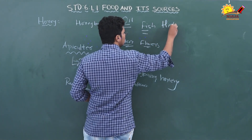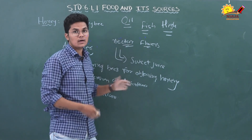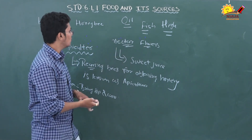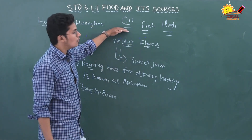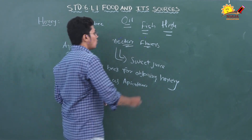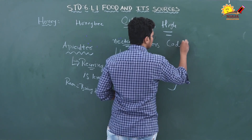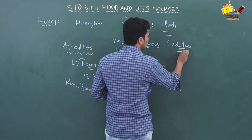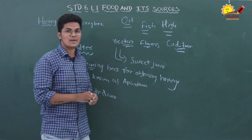Fish oil has high medicinal value. We make medicines from fish oil for heart disease, asthma, and cholesterol, so it is a very important animal source for all of us. Cod liver oil is used to make many types of medicine.